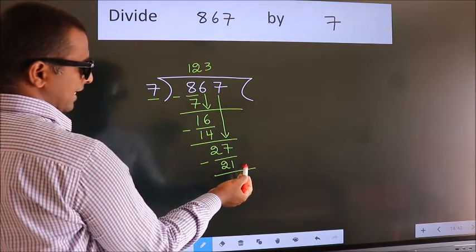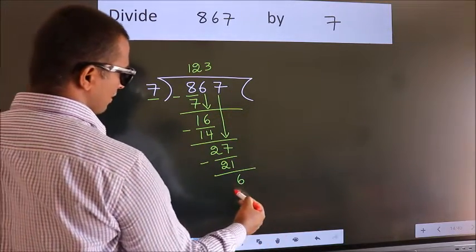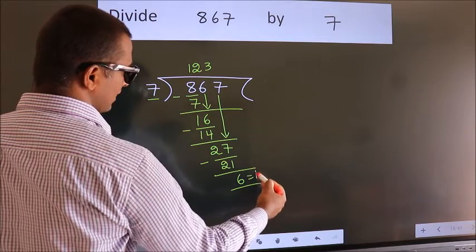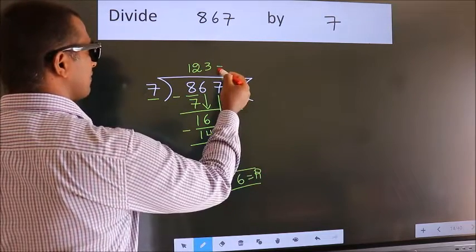No more numbers to bring down, so we stop here. This is our remainder, and this is our quotient.